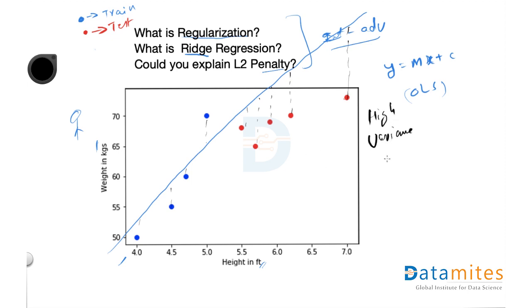To address this, what we can do is we introduce another term. This is your slope. This is your intercept. We introduce another term called lambda slope square. This lambda is a Greek alphabet is called as regularization parameter. If the lambda is equal to 0, then it simply becomes a linear regression.